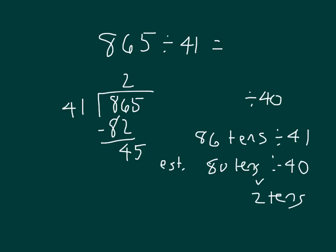And I can see right there that 45 ones divided by 41 is going to be 1. 1 times 41 is 41. 45 minus 41 is 4. Remember to write our remainder there. Our check again would be 41 times 21, and then we would add in that 4.